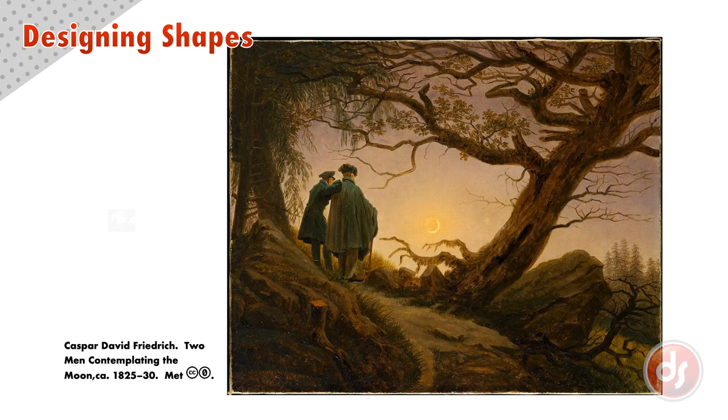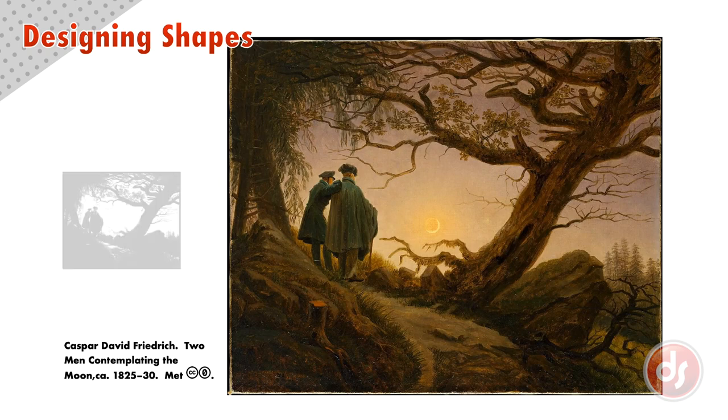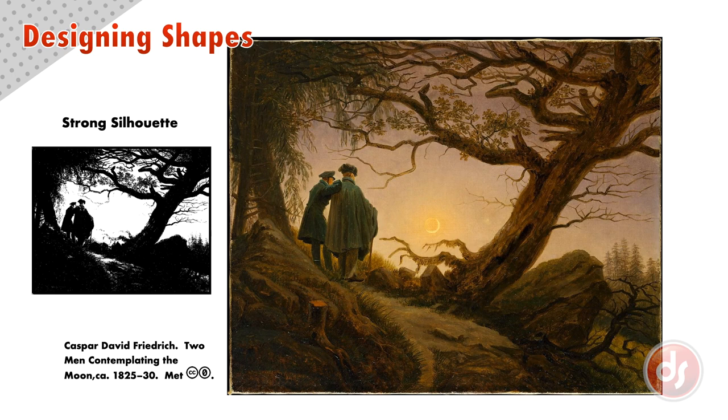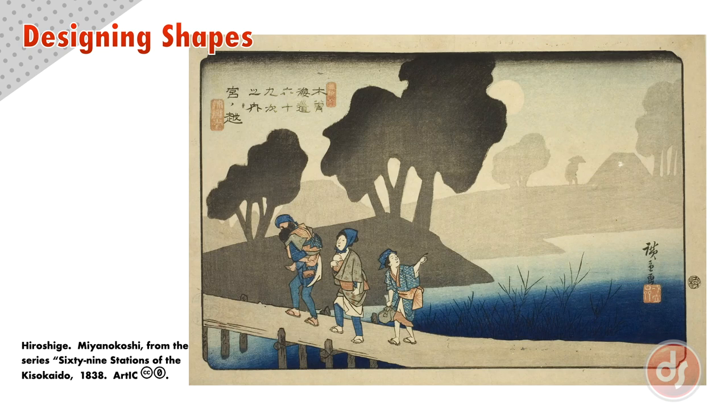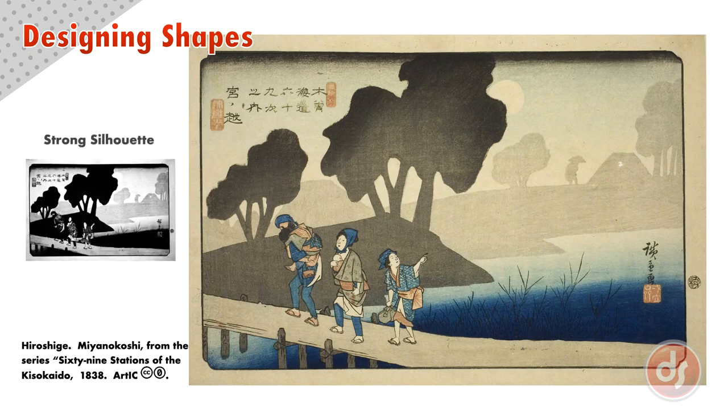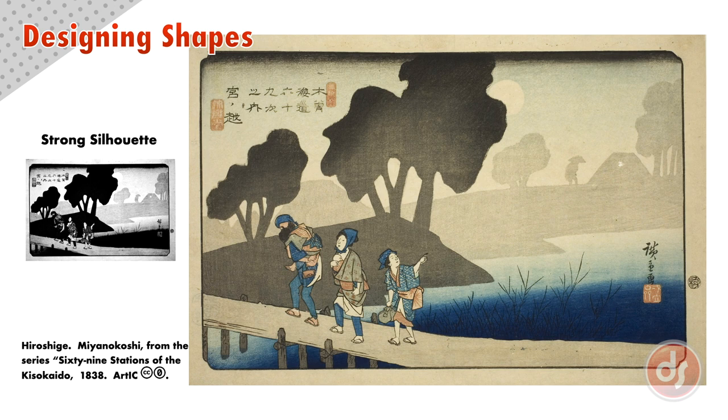But this also applies to all design, not just cartoons. This painting of two men contemplating the moon creates a design of very strong silhouettes of the figures and the trees, which makes the image clear and captivating. Hiroshige creates strong silhouettes for the trees and figures. He layers his composition with large silhouette shapes, like the distant hill with a tree and a walking figure. He paid careful attention to the design and balance of the shapes to make the image clear and the design easy to read.